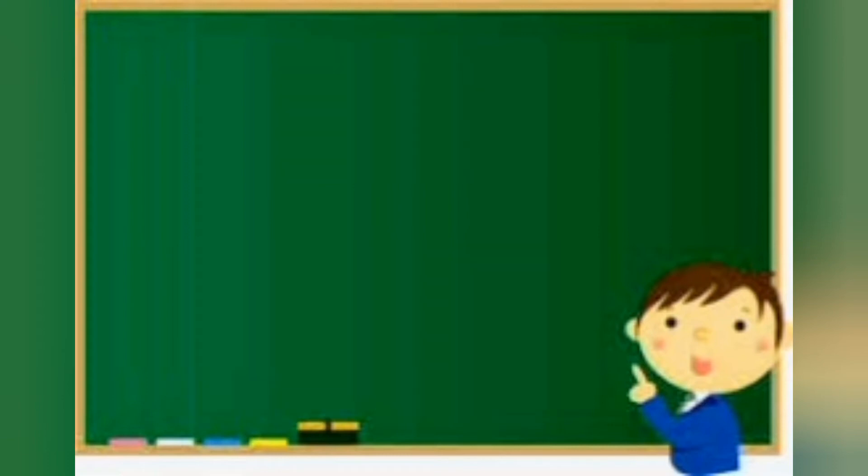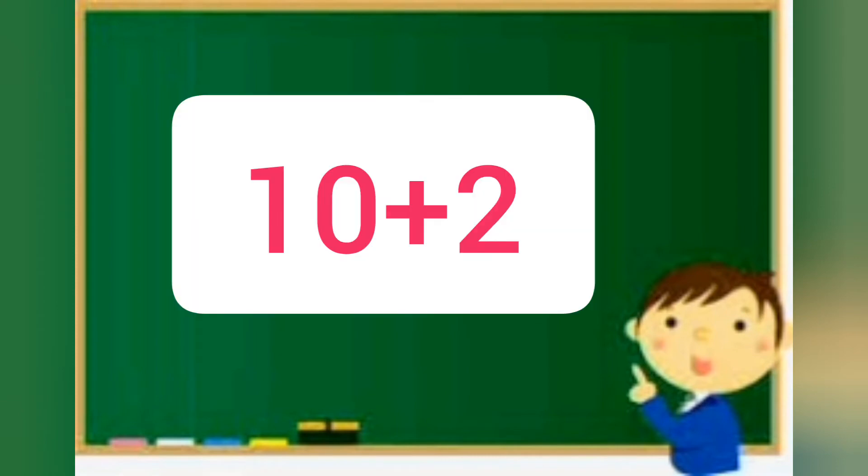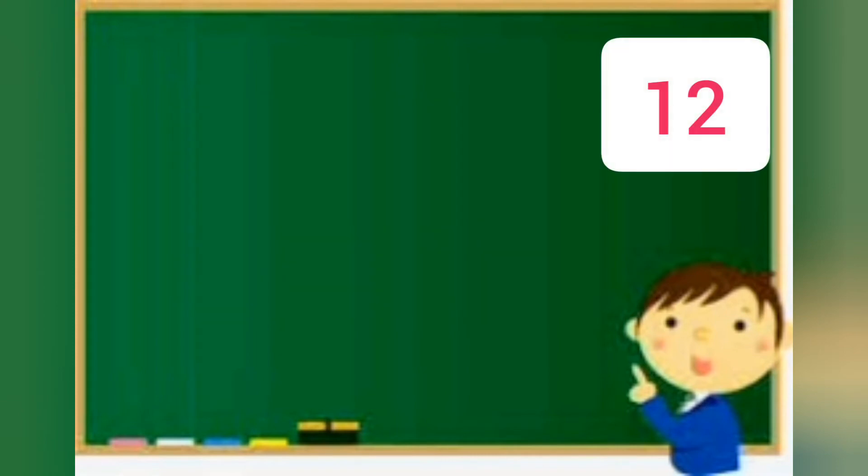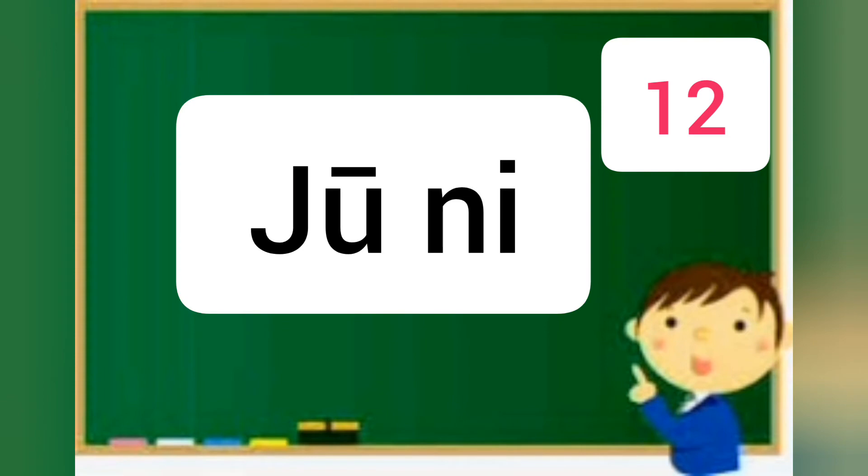Let's see number 12. 10 plus 2 equals 12. Ju-ni, ju-ni. Number 12 we say ju-ni in Japanese.